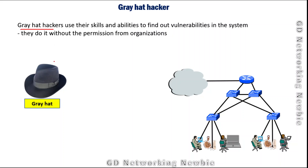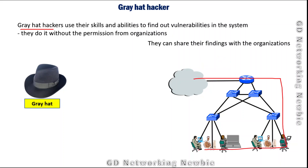The third type of hackers are known as gray hat hackers. They use their skills and abilities to find weaknesses or vulnerabilities in systems. They also don't get permission from the organization, but they don't normally act with malicious intentions. After finding vulnerabilities, they can share their findings with the organizations and may charge them for that purpose. They fall somewhere in between black hat hackers and white hat hackers. This covers the discussion about hacking in general and the three types of hackers.